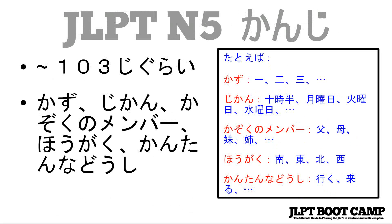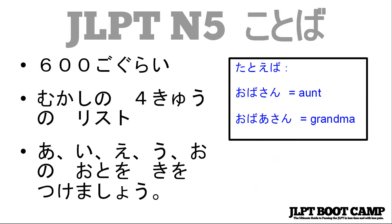JLPT N5漢字。N5の漢字のリストがありません。昔の4級の試験の漢字のリストでもいいと思います。iPhoneのアンキーソフトやウェブでこのリストがあります。N5の漢字は数（例えば、1、2、3）、時間（例えば、10時半、月曜日）、家族のメンバー（父、母、妹、姉）、方角（南、東、北、西）、と簡単な動詞があります。毎日使う漢字です。 — There is no official N5 kanji list, but the old 4-kyuu list is fine. You can find it on Anki and the web. N5 kanji include numbers, time expressions, family members, directions, and simple verbs — kanji used every day.